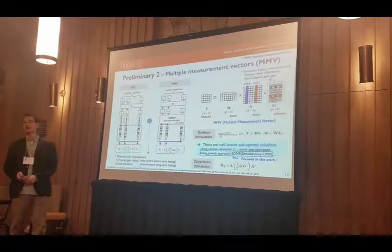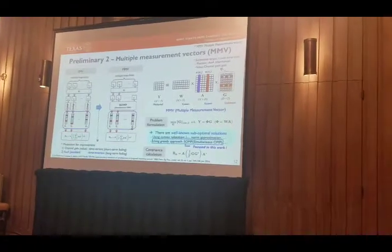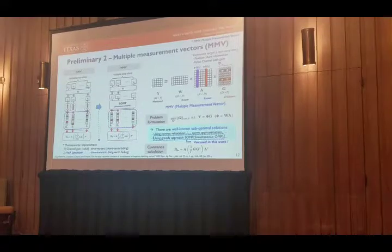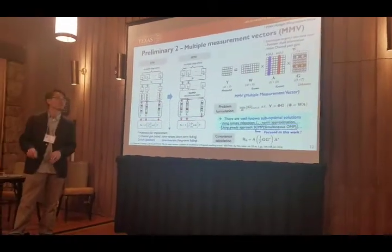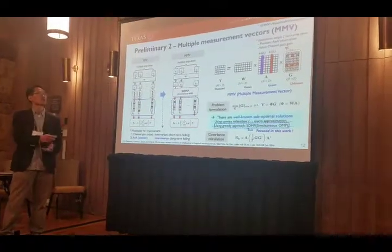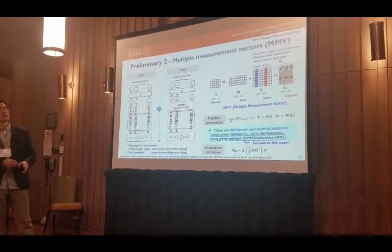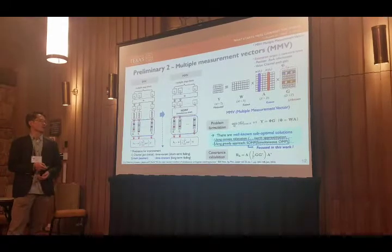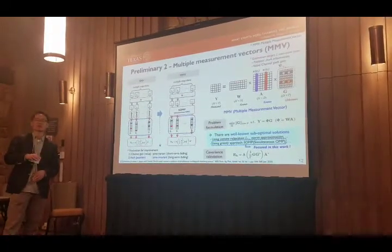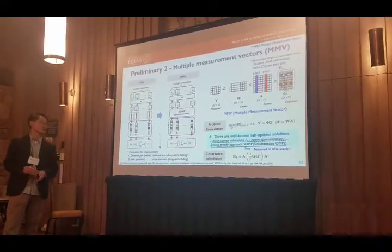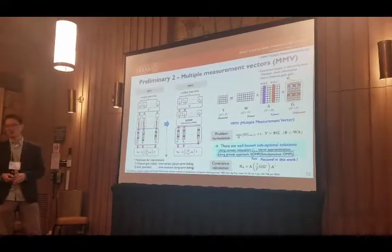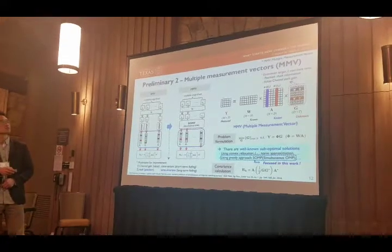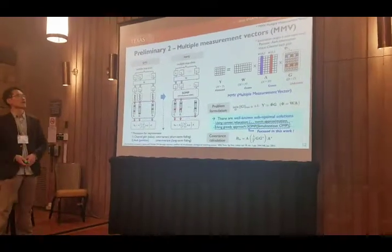Now let's look at the MMV, or multiple measurement vectors, case. In this case, the signal model uses matrix Y and G instead of vectors. The dimension M is the number of RF chains, and T is the number of snapshots in time. W and A are the same as in the SMV case. G is the target matrix with L non-zero rows. The rationale for the MMV problem is that each channel path gain is short-term and changes over time, but the angle-of-arrival information is a long-term parameter and changes slowly compared to the channel gain. So the positions of the non-zero elements are fixed across time.